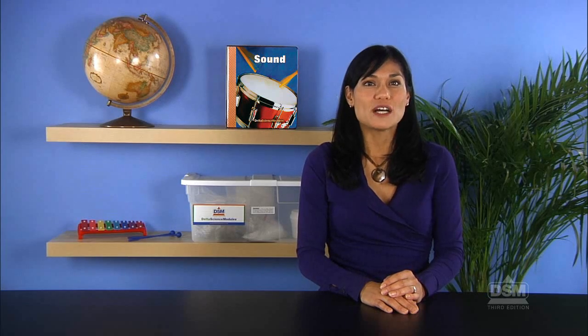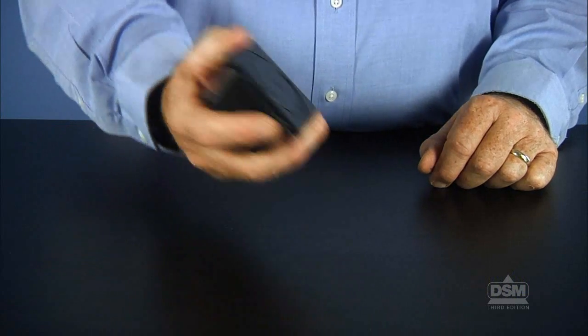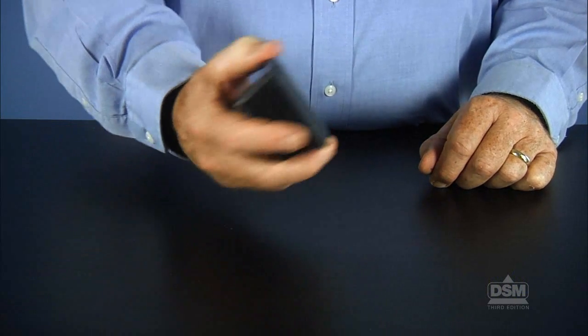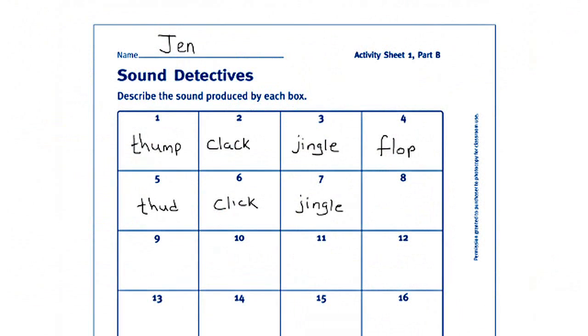Give each team of two a sound box. Tell the students to shake it and turn it upside down, and listen to the sound produced. Then, in the square on the Activity Sheet, under the number of that box, write a short description of the sound they heard.